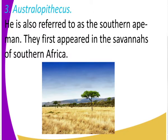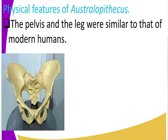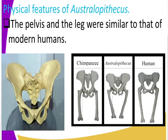Let us look at the characteristics of Australopithecus. The first characteristic is that the pelvis and the legs were similar to those of modern man. As we know from biology, the pelvis is the bone structure shown here. In the second image you can see the pelvis of a chimpanzee, the pelvis of Australopithecus, and the pelvis of a human — they are closely related and similar.